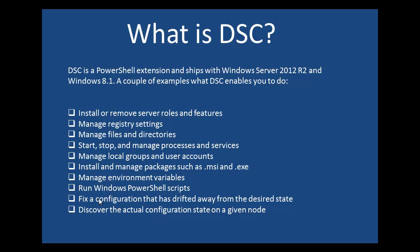The second from last option — fix a configuration that has drifted away from the desired state — is key. With DSC, we are able to actually write the configuration file for a machine. For example, if I had a DHCP server and some necessary services were removed, I could use the desired state configuration file for that server to repair it and bring it back to its original state.